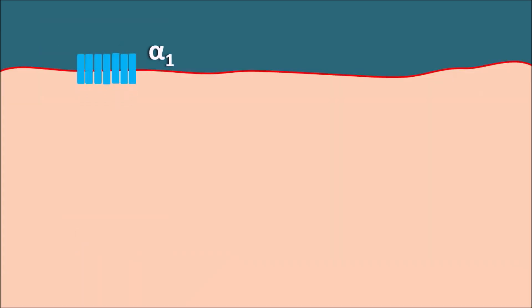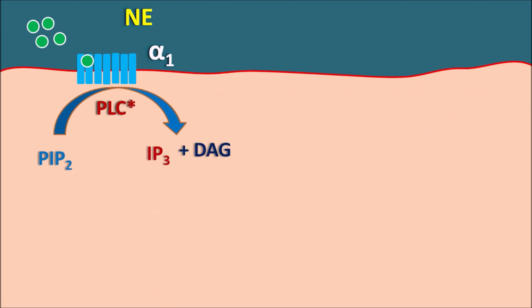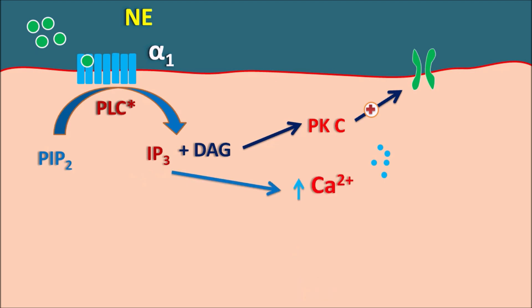Alpha-1 receptors are seven-transmembrane G-protein coupled receptors. When norepinephrine binds to these alpha-1 receptors, they activate the phospholipase C system. Phospholipase C is a cleavage enzyme that cleaves phosphatidylinositol bisphosphate into two important secondary messengers: IP3 and diacylglycerol. Diacylglycerol can further activate protein kinase C, which then opens inward calcium channels. Calcium enters through these channels, and IP3 can also release calcium from internal stores. The raised levels of intracellular calcium produce contraction in smooth muscle, or excitation in neurons, or secretion in glands. In this way, alpha-1 receptors are excitatory in nature and increase intracellular calcium levels.